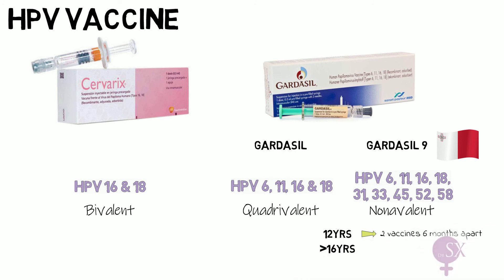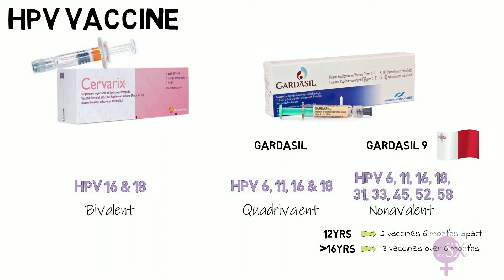If over 16 years of age, three vaccines will be required, given over a period of six months. It is important to keep in mind that these vaccines are preventative and not a treatment. Studies have also shown that immunity is not built towards HPV types, so a woman who currently has HPV 16, for example, will still benefit from the vaccine as she is at risk of obtaining other HPV types, and is also at risk of obtaining HPV 16 again.